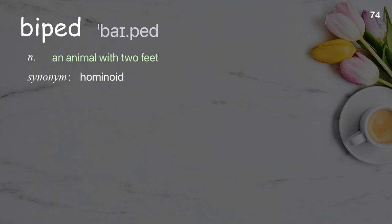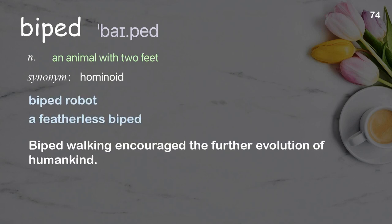Biped: An animal with two feet. Examples: Biped robot. A featherless biped. Biped walking encouraged the further evolution of humankind.